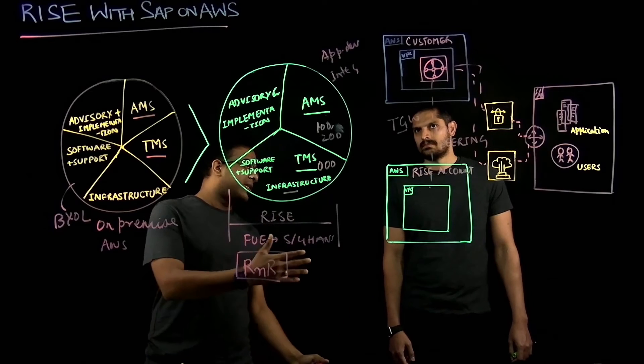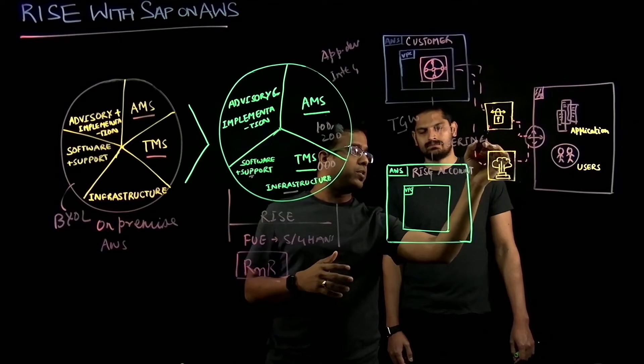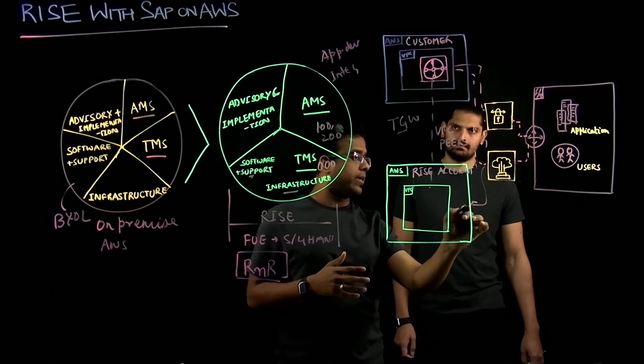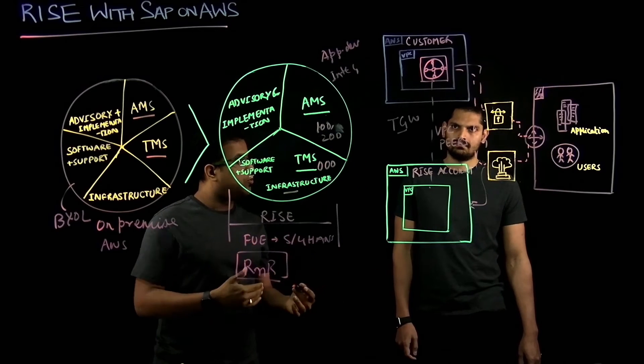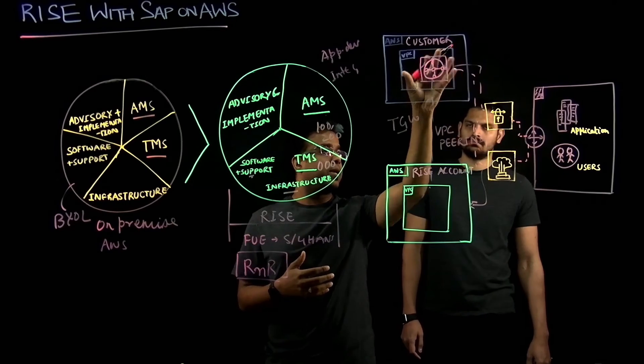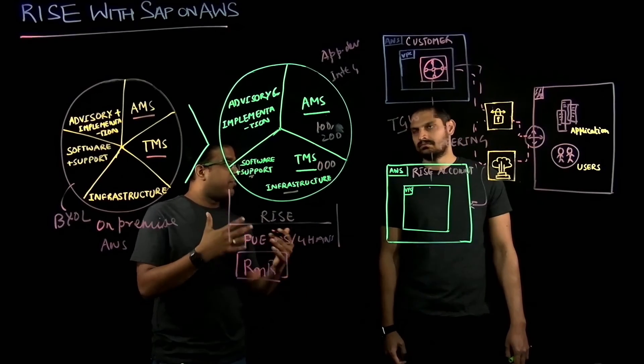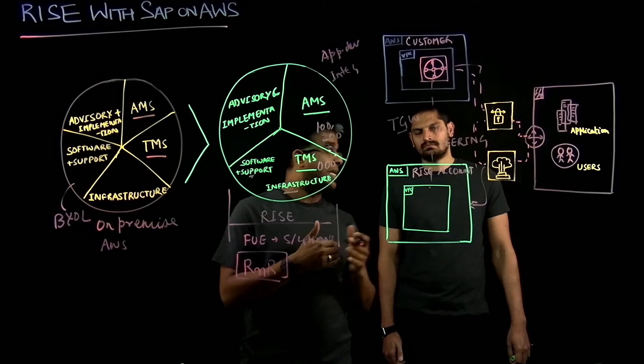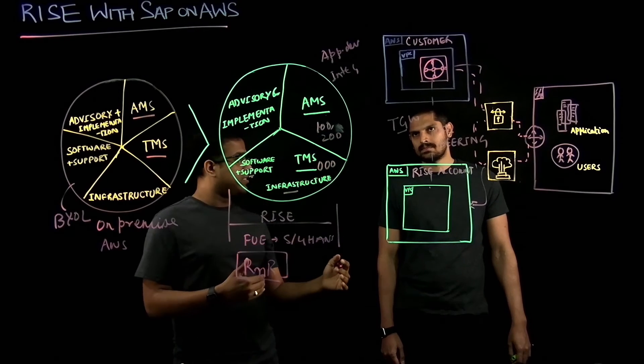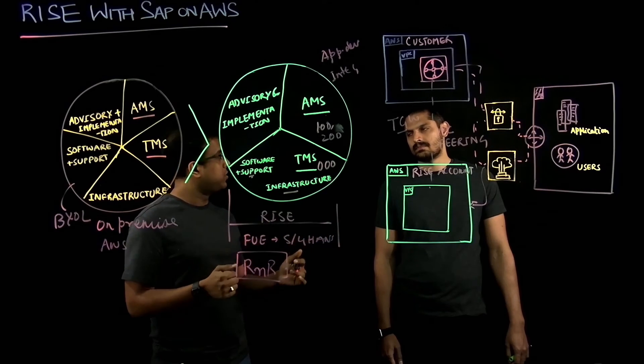That is one option. Second option is customer has a Rise account where their corporate data center is connected to Rise account using site-to-site VPN or direct connect. They can continue to use other AWS native services or non-SAP systems on AWS customer account and use VPC peering from here to establish that connectivity. So, there are different options depending on where customer is on their cloud journey and we can work closely with customers, partners or SAP to make sure they are getting the best from their SAP on AWS investment.